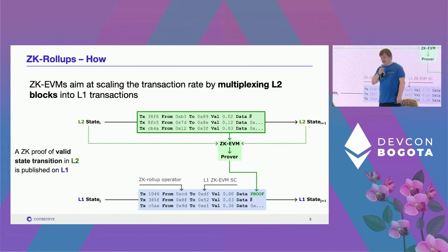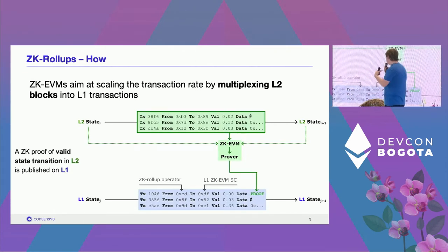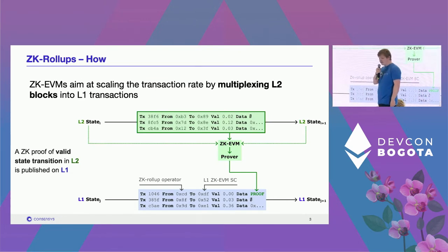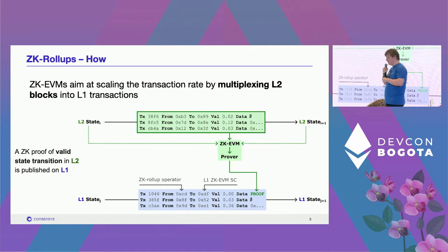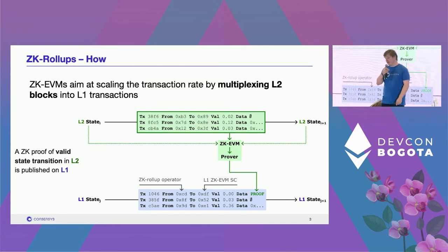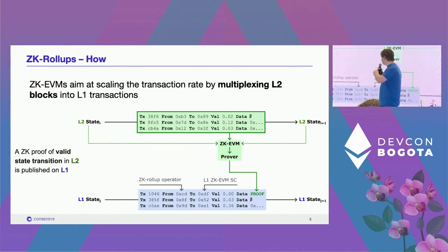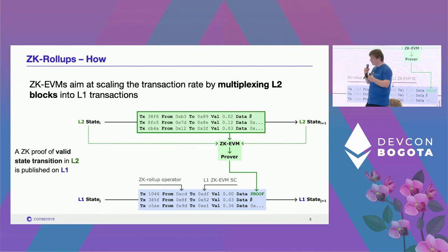In concrete terms: you have your L2 with a state, a bunch of transactions roll in, and executing them induces a transition of state. The ZK EVM plugs itself at this point — it extracts the required data from the previous state, takes into account the transactions and the diff of the new state, does its magic, produces traces, passes them to a prover, and the prover produces a proof which ends up on mainnet. You bundle all L2 transactions into a single L1 transaction.